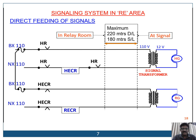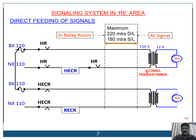Direct feeding of signals means we are directly giving one terminal supply from our relay room to the signal. Here in the relay room, HR has picked up and the supply has come to pick up our bulb — HG, DG, RG, whatever it is. Nowadays we are not having a transformer; we are directly giving it to our LED unit. The maximum distance permitted between the relay room and the signal is 220 meters on double line and 180 meters on single line.